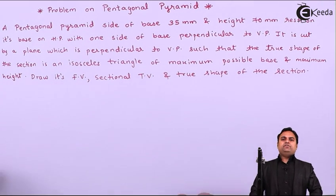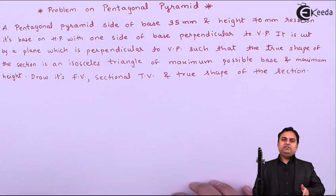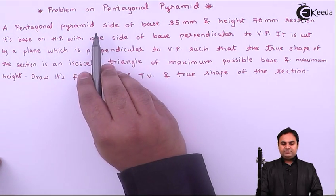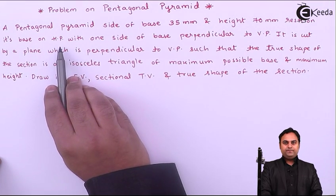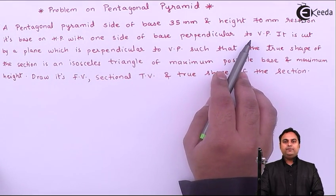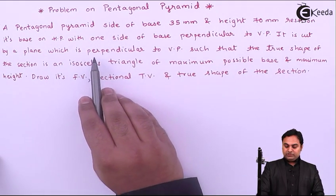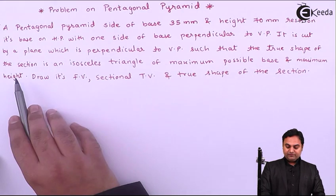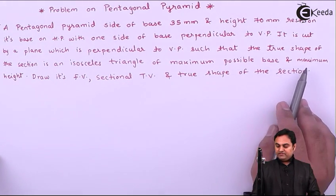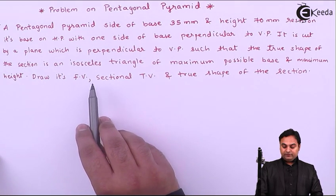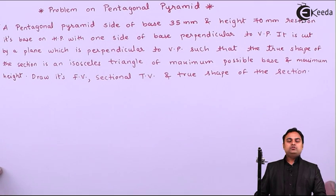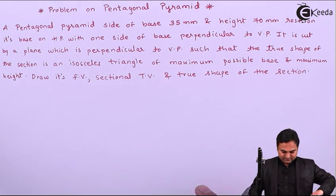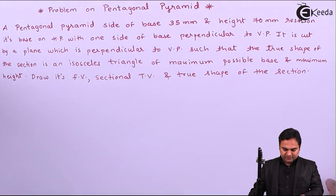In this video we are going to see a problem on a pentagonal pyramid which is to be cut. A pentagonal pyramid of side 35 mm and height 70 mm rests on its base on HP with one side of base perpendicular to VP. It is cut by a plane perpendicular to VP such that the true shape of the section is an isosceles triangle of maximum possible base and maximum height. We need to draw its front view, sectional top view, and true shape of the section.